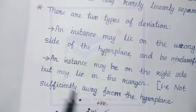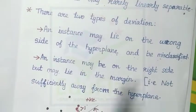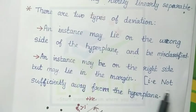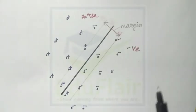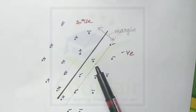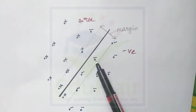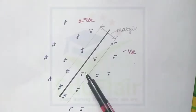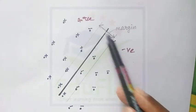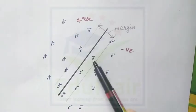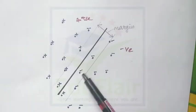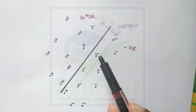The second reason is that an instance may be on the right side of the hyperplane but may lie in the margin — that is, it is not sufficiently away from the hyperplane. For example, this data point is a negative sample correctly classified, but it has appeared in the margin. So it is correctly classified as a negative sample but lies within the margin.